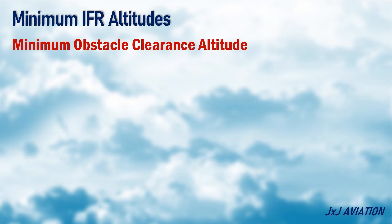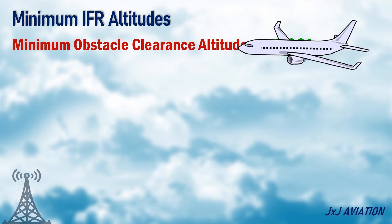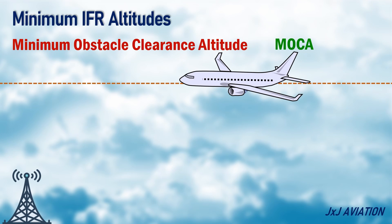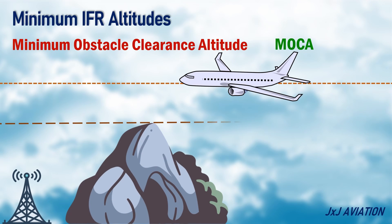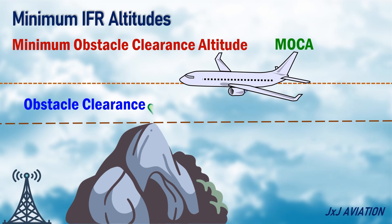Minimum Obstacle Clearance Altitude, MOCA — this is the lowest altitude at which an aircraft can fly on a specified route. This altitude provides guaranteed obstacle clearance but does not guarantee signal coverage.